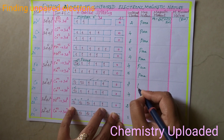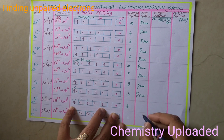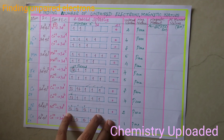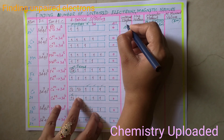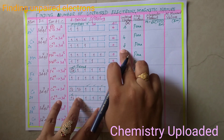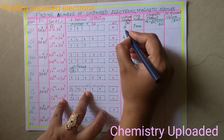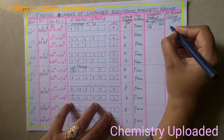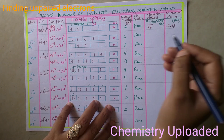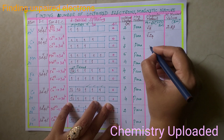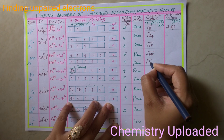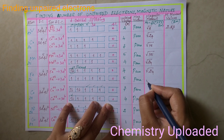Next, the magnetic moment formula. The formula is: μ = √(n(n+2)), where n represents the number of unpaired electrons. If you apply the n value, you will get root values. For n=2, you get √8, which equals 2.83 Bohr magneton. For n=4, you get √24. For n=3, you get √15. For n=5, you get √35.